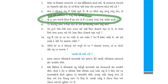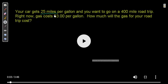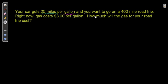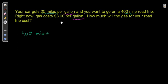I'm going to show you a video. A new car gets 25 miles per gallon. If you have a car that gets 25 miles per gallon, you will be able to do a trip of 400 miles. Right now, gas costs $3 per gallon. How much is the gas for your road trip?